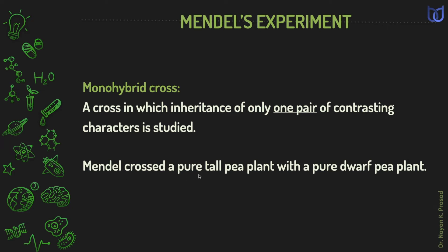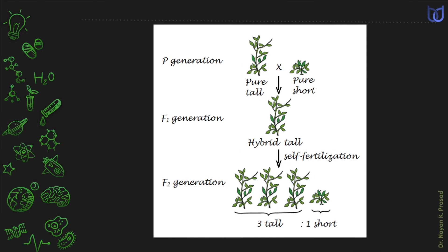Mendel crossed a pure tall pea plant with a pure dwarf pea plant. The plants appeared in F1 generation were all tall. Several crosses were carried out, but the results were same. The plants of first filial generation were left to self-pollinate. The seeds collected and planted to produce the F2 generation. In second filial generation, both tall and dwarf plants were produced in the ratio of 3 to 1.